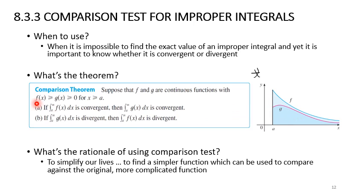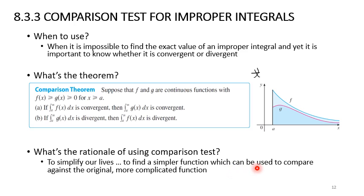It doesn't work the other way around. f(x) can be divergent while g(x) is still convergent, since f(x) is larger. We need to find a comparison function such that if one converges, the other also converges, and if one diverges, the other also diverges. We use the comparison test to simplify our work. Let's do an example to see how the comparison test is applied to determine whether a complicated integral is convergent or divergent.